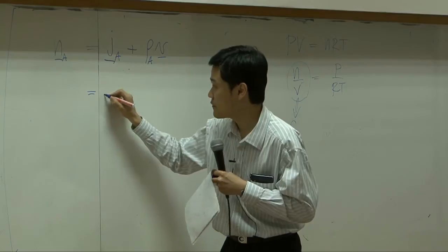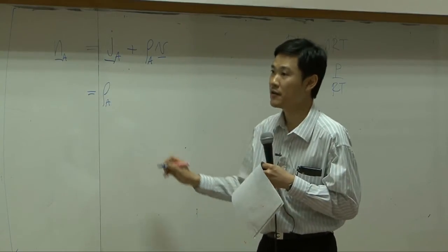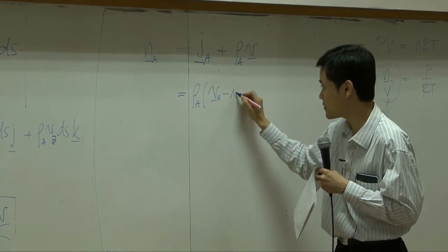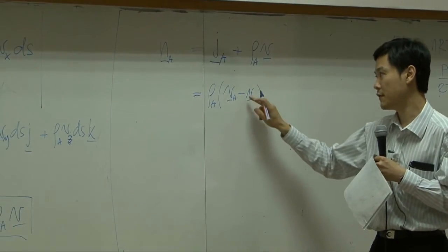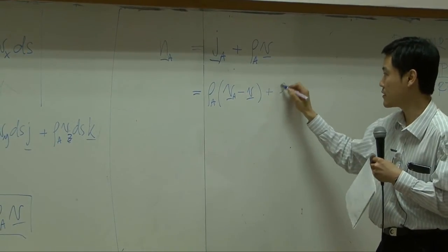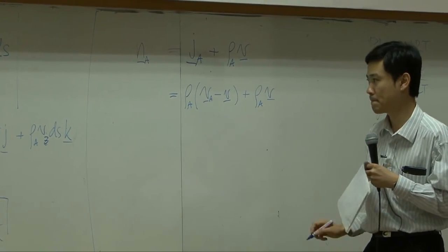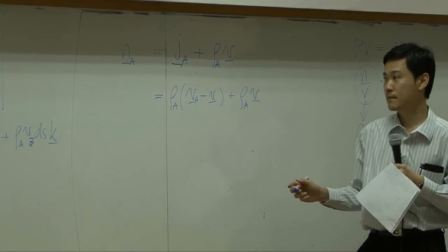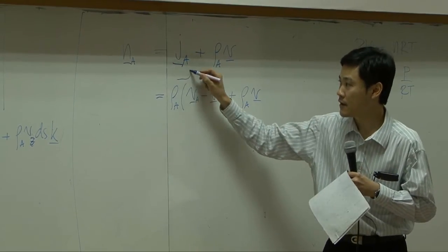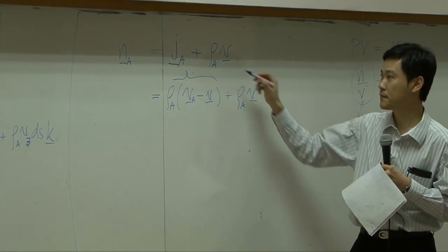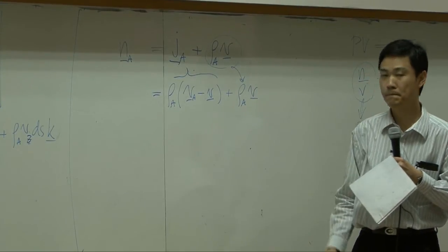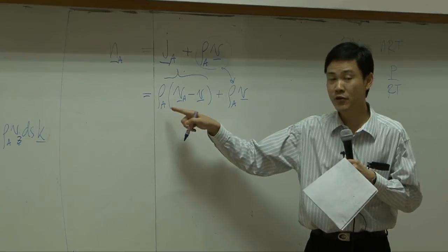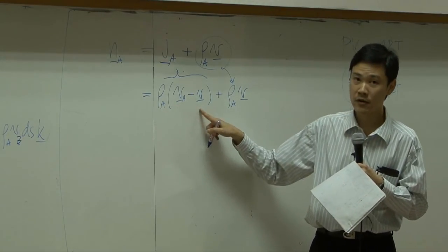Now, J A itself, according to theory, it is rho A times V A minus average velocity V plus rho A V here. This would be this term. And this term comes here.